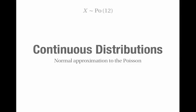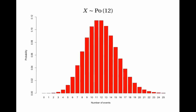Suppose that X has the Poisson distribution with parameter 12. If we draw a bar chart which shows the probability for each possible number of events, you'll notice straight away that very roughly it has the bell shape that you associate with the normal distribution. The mean for a Poisson distribution is the parameter lambda — the expected number of events — which in this case is 12. And the variance is also equal to lambda, so that's also 12. If we draw the normal distribution curve with mean 12 and variance 12, you'll see that it has a very similar shape to the bar chart for the Poisson distribution.